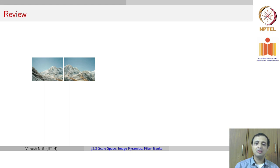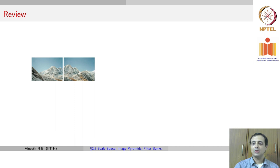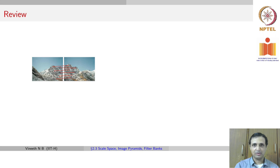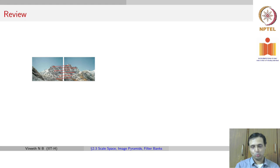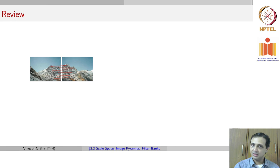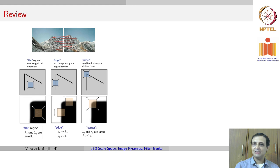Let us say we have two images which correspond to the same scene from two different locations. We do not know the camera movement between these two images but we want to stitch them. We typically detect key points in each image independently — for example, using the Harris corner detector on image 1 and image 2 — and then match which key points in image 1 match which key points in image 2. Our focus now is on finding those key points.